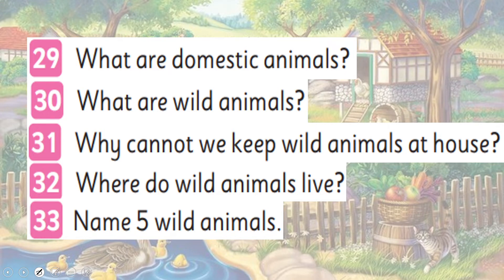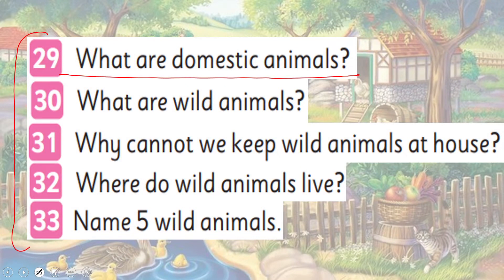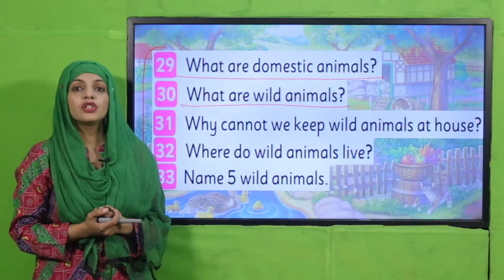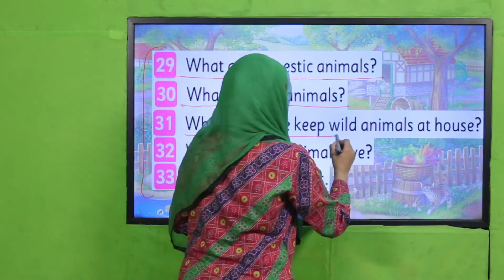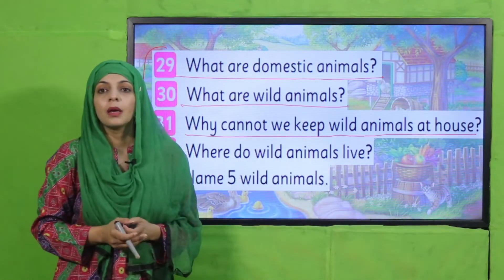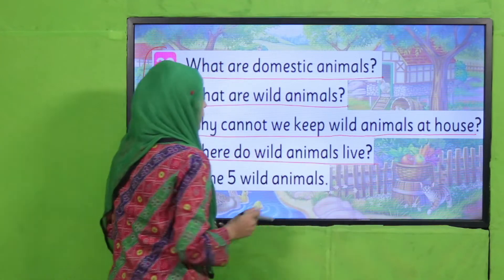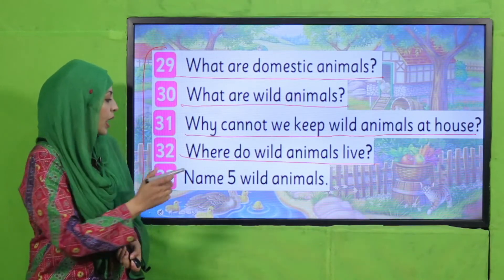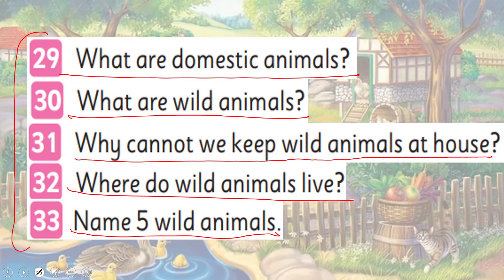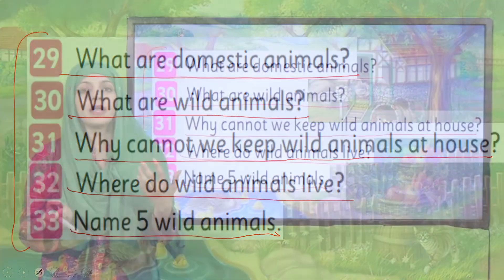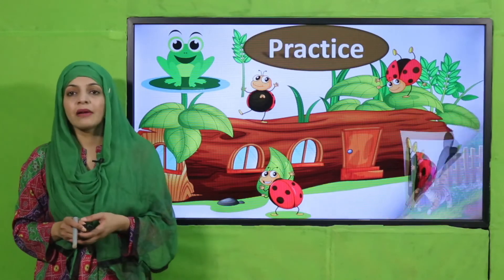I will ask questions from the listening and speaking section, questions 29 to 33. What are domestic animals? Domestic animals are those which we can keep in our house. What are wild animals? Wild animals are those animals which live in the jungle. Why can't we keep wild animals at our house? Because they can be harmful to us. Name five wild animals: lion, monkey, tiger, elephant, hippo, snake — these are all examples of wild animals.